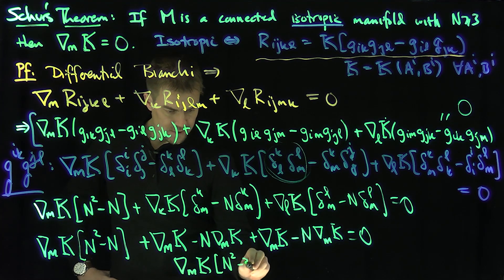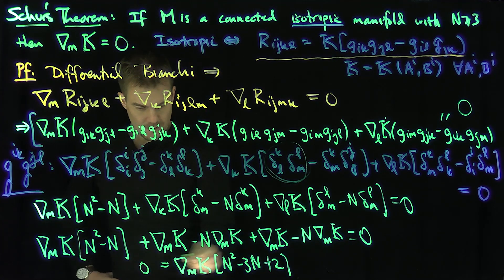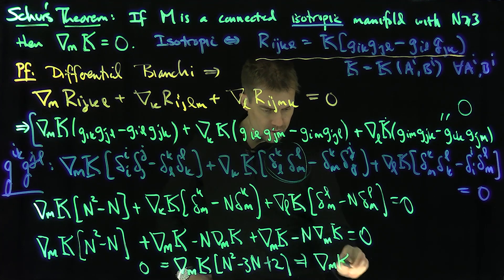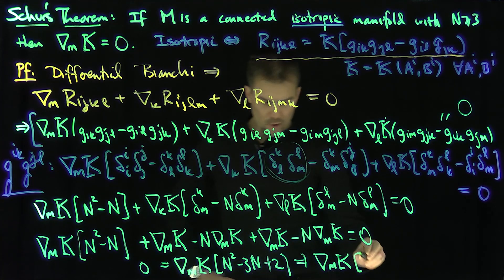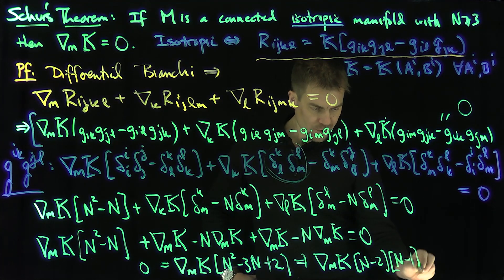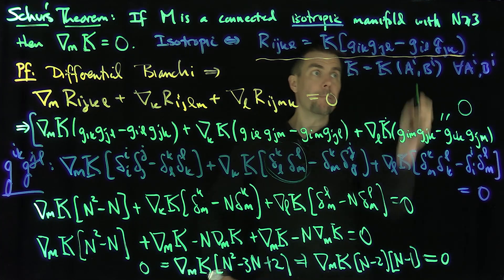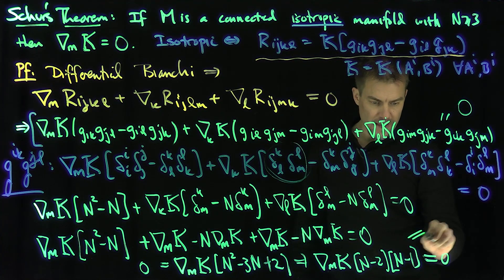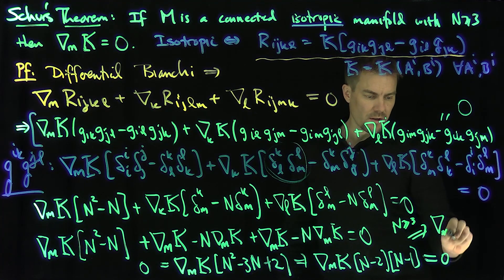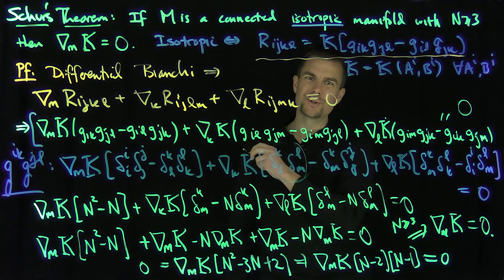The factor n squared minus 3n plus 2 factors as n times (n minus 2)(n minus 1). So if you're in dimension one or dimension two, those expressions could be zero. But if you're in dimension bigger than or equal to 3, that forces the covariant derivative of the sectional curvature to be equal to zero. And that proves Schur's Theorem. Thank you very much.